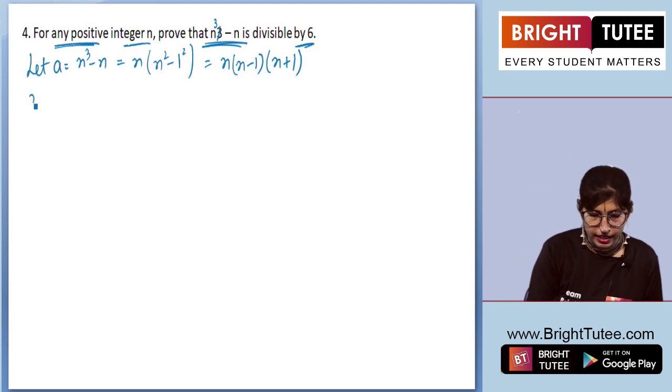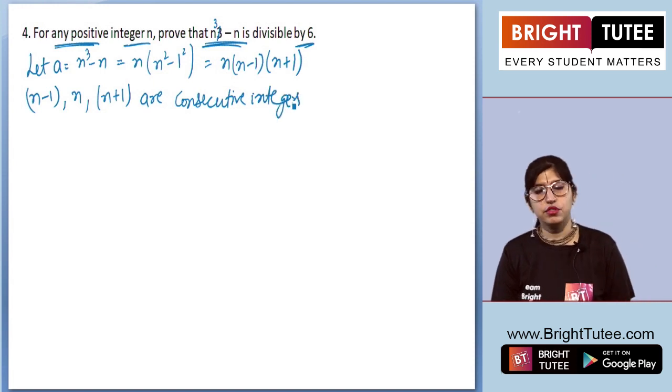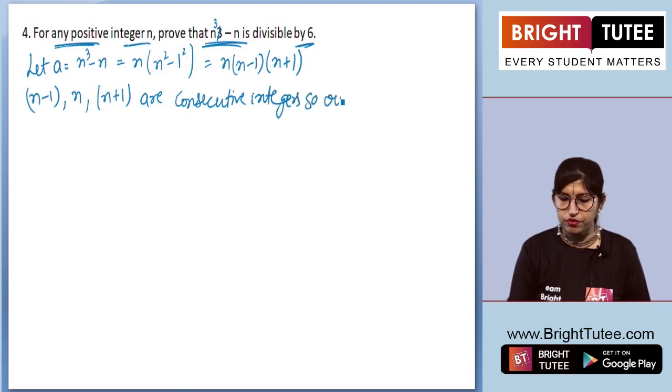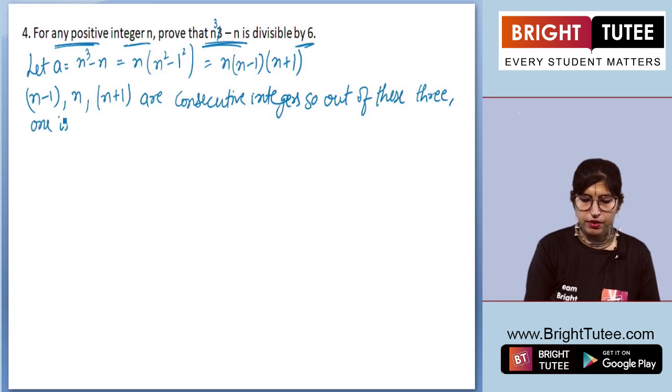Now we can see that (n - 1), n, and (n + 1) are consecutive integers. So what can we say? Out of these 3, one will be divisible by 2.